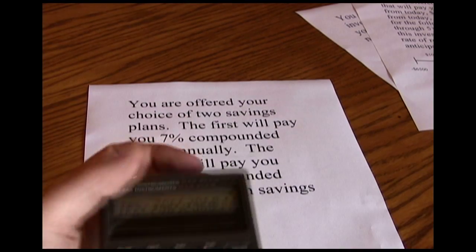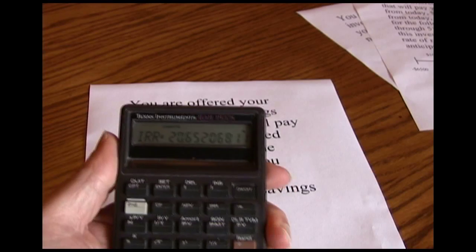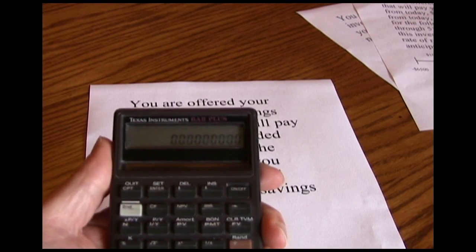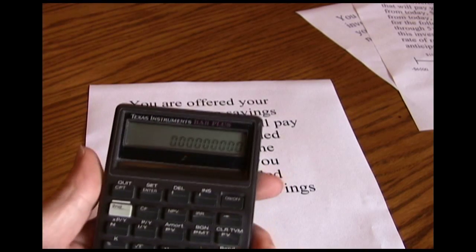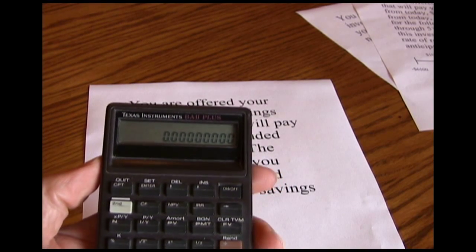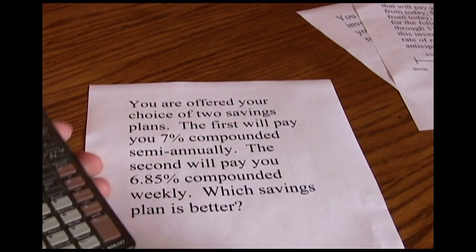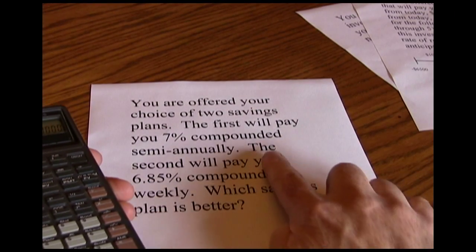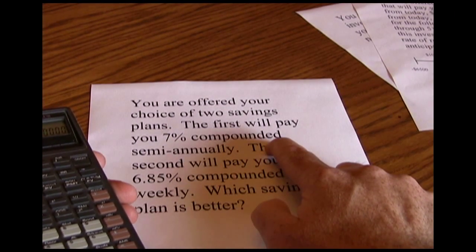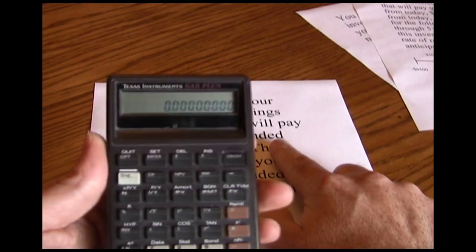In order to do that we have to use something called equivalent or effective annual rates. The effective annual rate just converts the interest rate to what it would be equivalent to on an annual compounding basis.